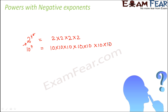Now the question is: what does 2 to the power minus 4 mean? Or what does 10 to the power minus 7 mean? Now, 2 to the power 4 and 2 to the power minus 4 definitely cannot be the same thing, so they need to be something different. So what is it?